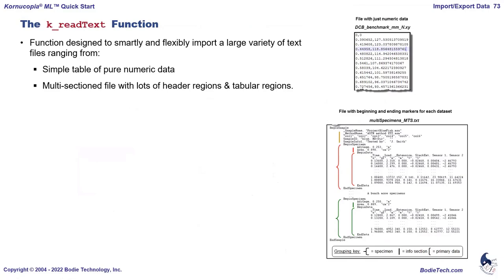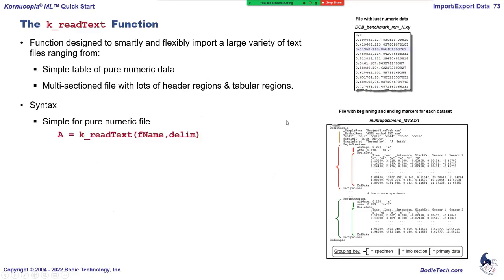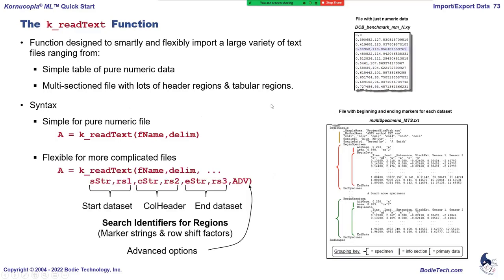The workhorse is the read text function. It's designed to read everything from single data sets with no column names, to files with multiple data sets rich with information. For a simple data file, you give it the file name and delimiter and Chronucopia reads pure numeric data. For more complex files, you additionally provide three sets of parameters: where the data set starts, where the column headers begin, and where the data set ends. The help page gives lots of good examples.